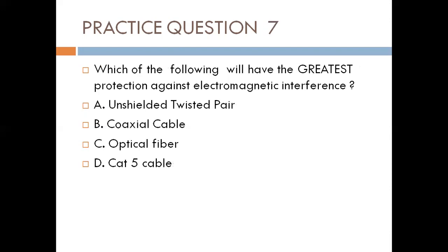Question seven. Which of the following will have the greatest protection against electromagnetic interference? A. Unshielded twisted pair cable, B. Coaxial cable, C. Optical fiber, D. Cat5 cable.